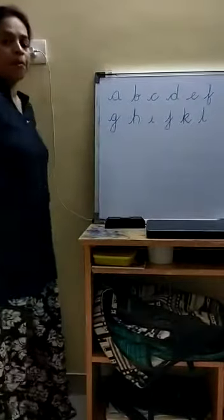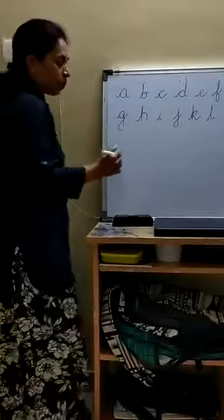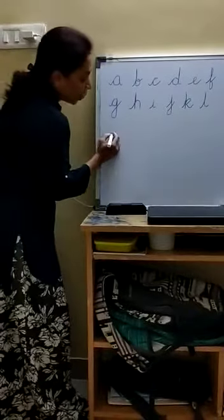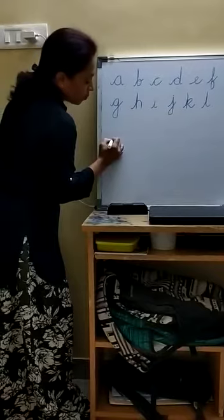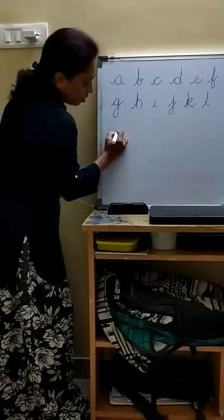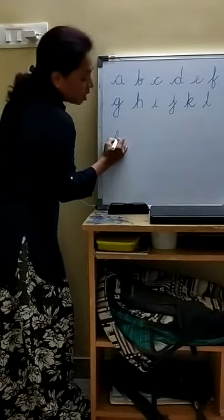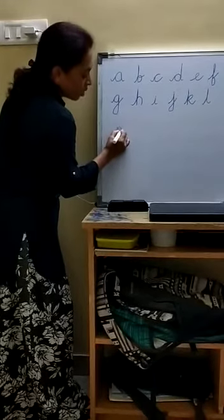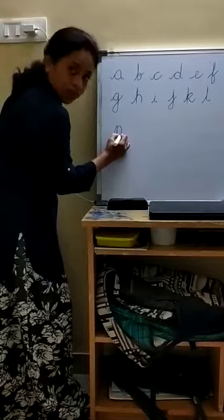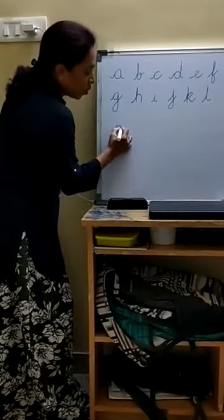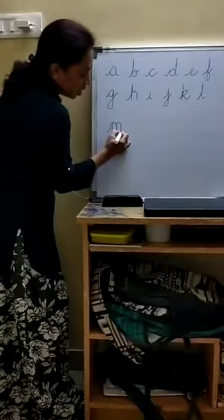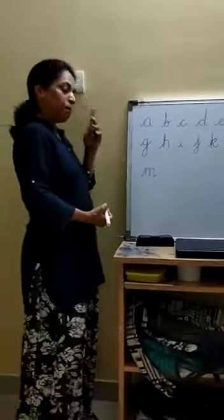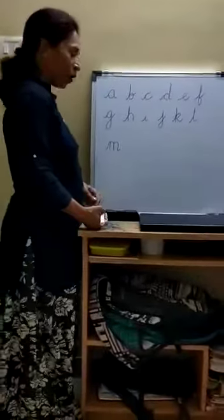Next is M. Name of the letter is M. Sound of the letter is M. How to write? Starting from a tail in the third line to the second line, come back to the third line again, go back, take a U-turn, come back to the third line, again go up, and come back to the third line and leave with a tail. M. Mango.